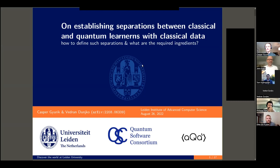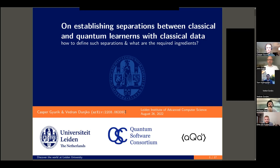Perfect. Thank you, Elias, for the introduction. Today I'll be discussing a paper on establishing separations between classical and quantum learners with classical data. We restrict ourselves to classical data in this case. We really focus on two main questions: how to properly formally define what we mean by separation, and what are the required ingredients for such a separation. The archive number is right here.